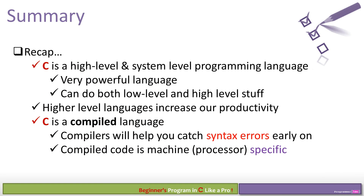As a summary: C is both a high-level and system-level (low-level) programming language — a very powerful language that lets you do both low-level and high-level work. High-level languages increase your productivity. C is a compiled language, not interpreted. The compiler is very useful at catching syntax errors early on, and the compiled code is machine-processor specific.